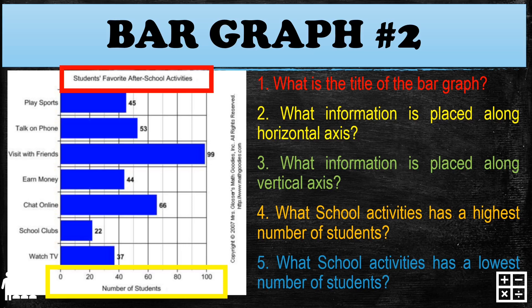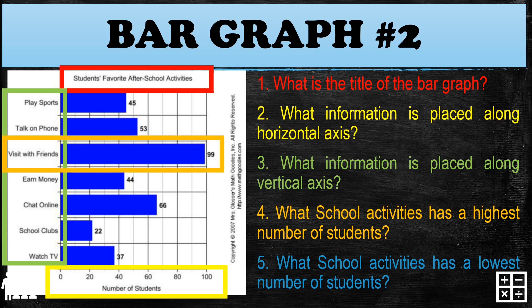For question two, what information is placed along the horizontal axis? The information placed along the horizontal axis is the number of students. For question three, what information is placed along the vertical axis? The vertical axis is on the side of the bar graph, and the information placed along it is the different activities. For question four, what school activity has the highest number of students? Look at the data — which activity has the highest number?